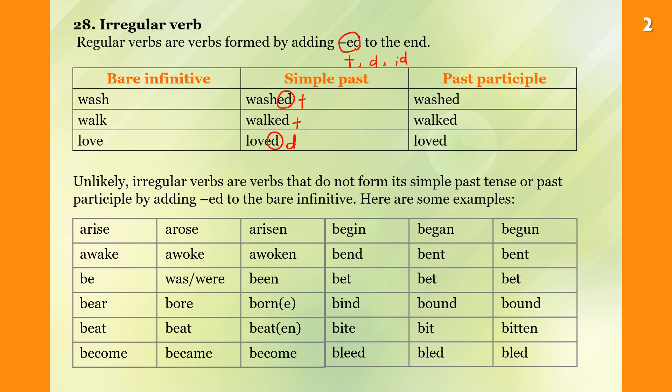Unlike regular verbs, irregular verbs are verbs that do not form their simple past tense or past participle by adding -ed to the bare infinitive. Here are some examples: arise, arose, arisen.